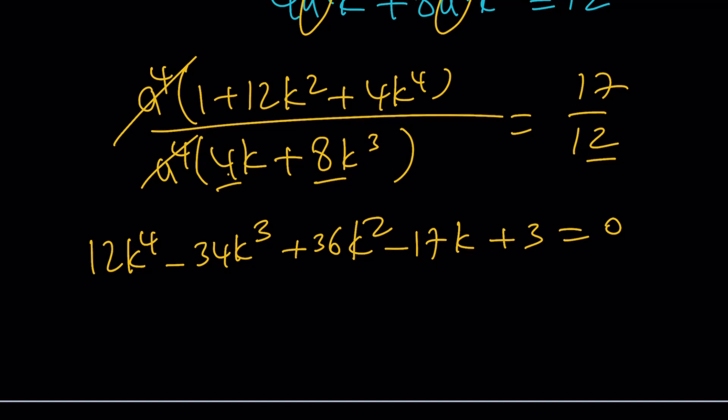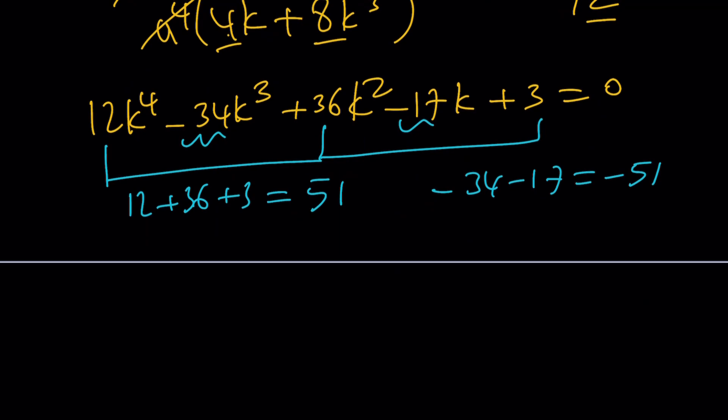This is a quartic equation just like the previous problem we did. Solving a quartic is not easy. You can use rational root theorem and kind of guess and check some candidates. But one of the things you should always check is the coefficients. It almost always helps. And if you do that, hopefully you realize, let's do the positives first. If you add these up, 12 plus 36 plus 3 is going to give me 51. And then negative 34 and negative 17 is going to give me negative 51. So the sum is 0, which means k equals 1 is a solution.